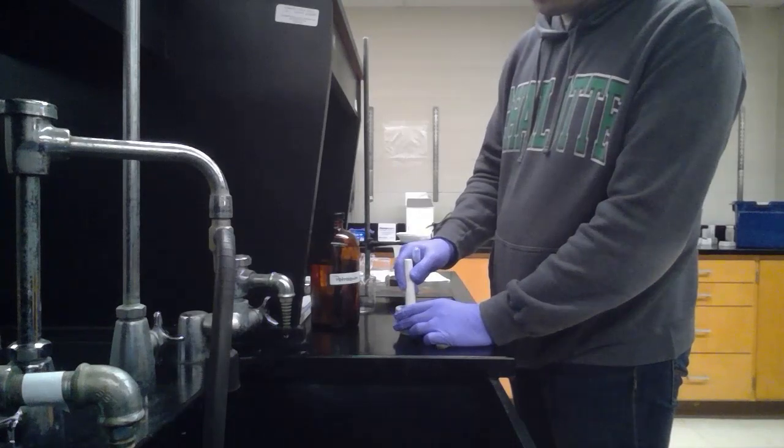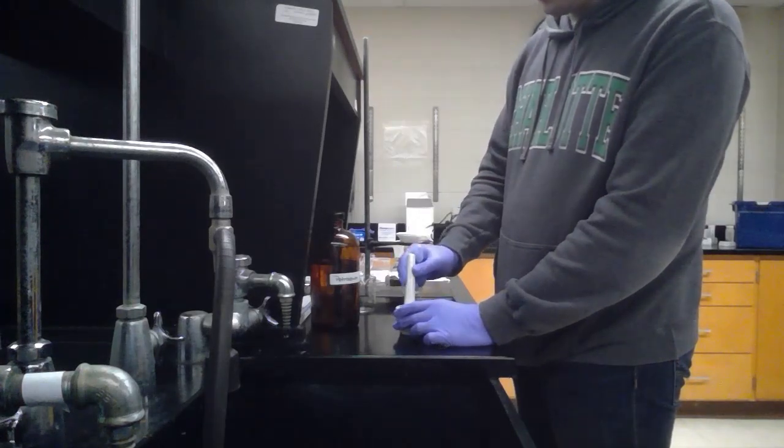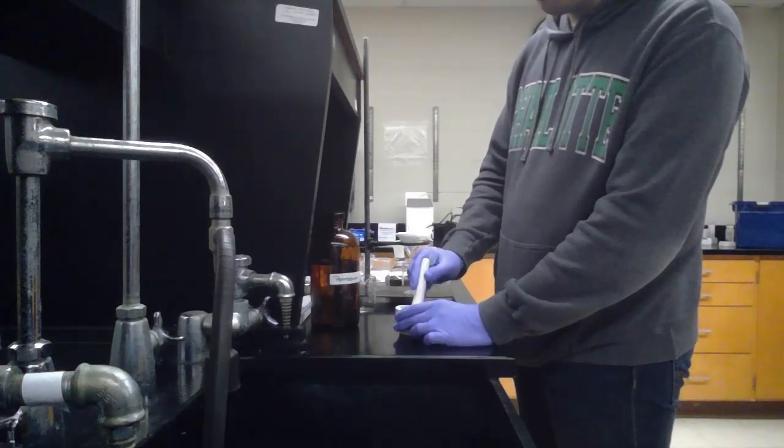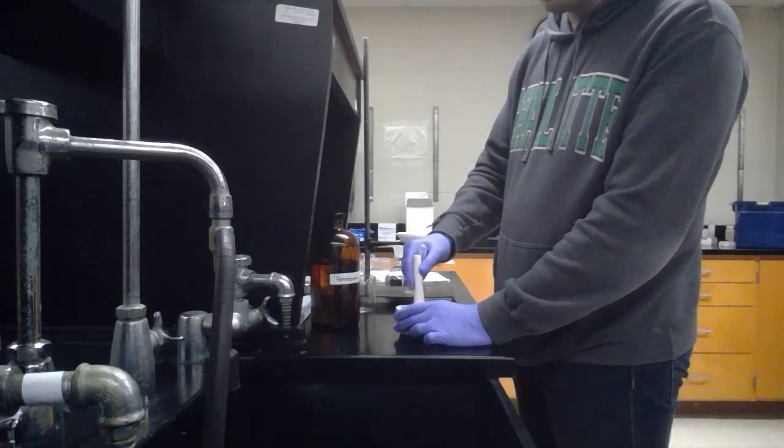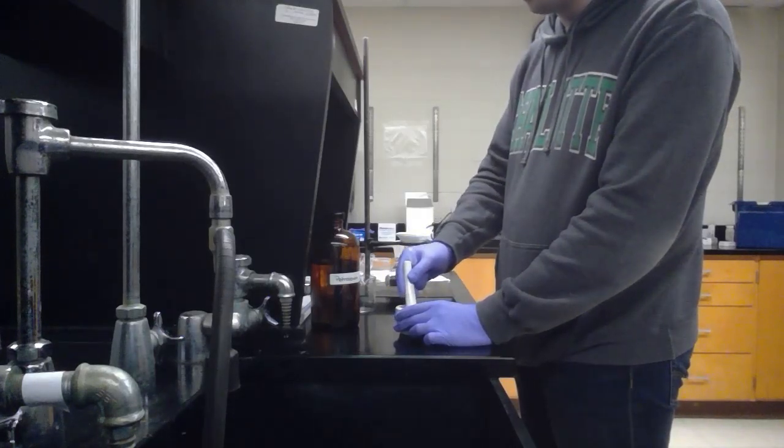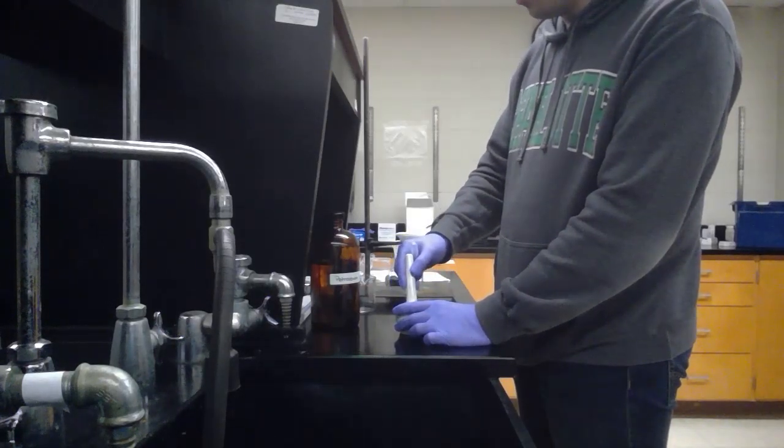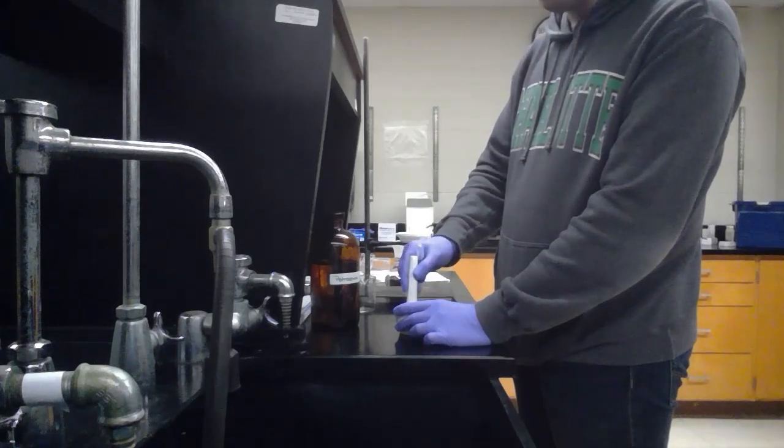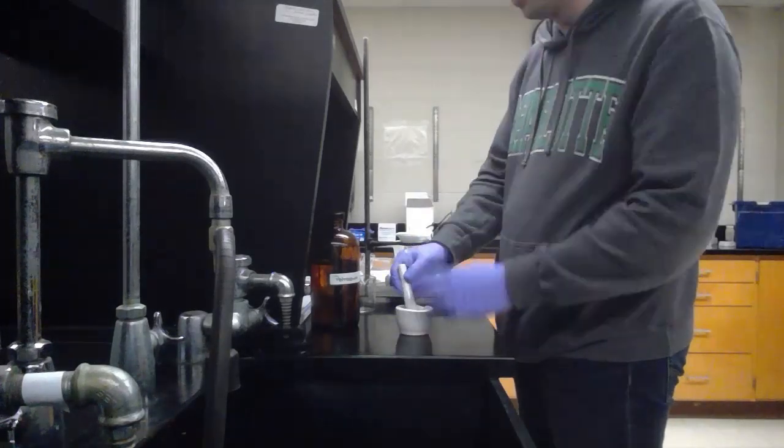Basically we're going to dissolve everything, try to get as much of the fat out of here as possible. But remember, we're going to do this two more times, so it's fine if you don't get everything out the first time. And then we're just going to pipette all the liquid off the top of it and filter it through this funnel.